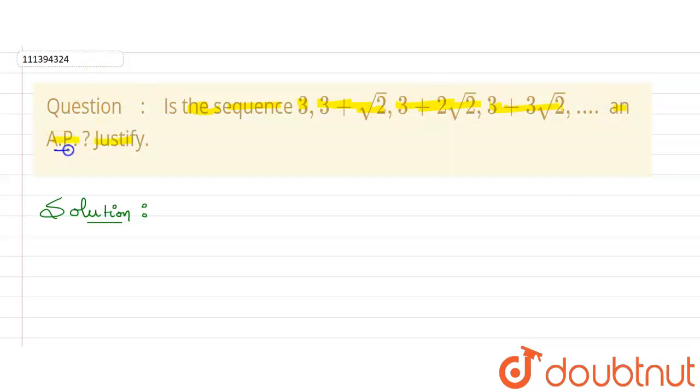So, we need to check whether this is AP or not. AP stands for Arithmetic Progression. We have a property in AP.